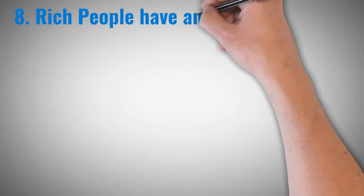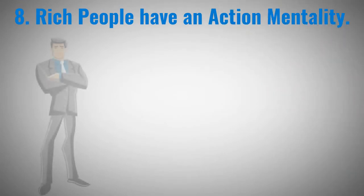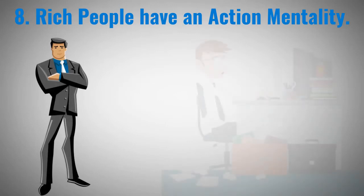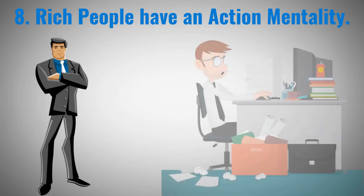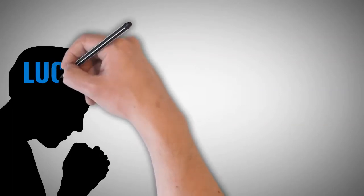Rich people have an action mentality. Rich people do not wait before taking action, as they are always proactive and take action. They know they own their destiny, and becoming rich depends on their hard work. Poor people need someone or something else to make them rich. Poor people believe luck makes people rich and not their hard work.